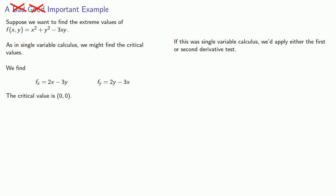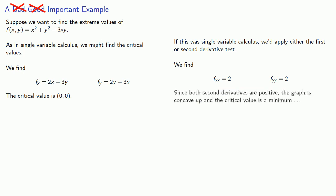Now if this was single variable calculus, we might apply the first or second derivative test. This is one of the very few cases where the second derivative test isn't too terrible because we can find the second derivatives easily enough. And since both second derivatives are positive, the graph is concave up and the critical value is a minimum — at least this is what would happen in two dimensions. But we're actually in three.